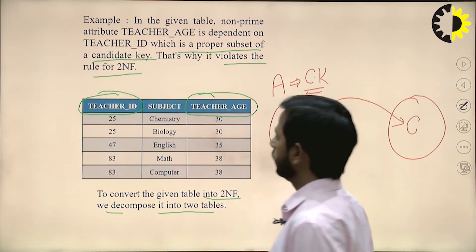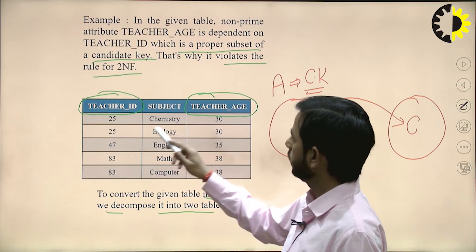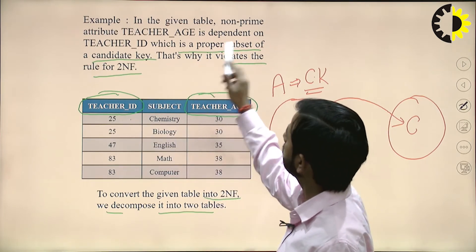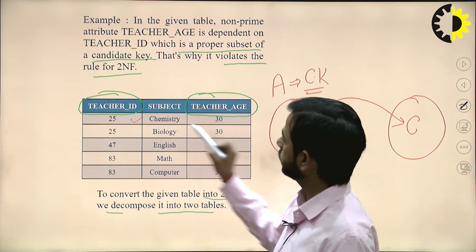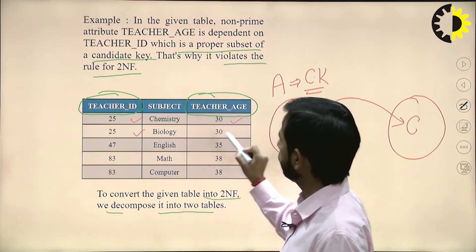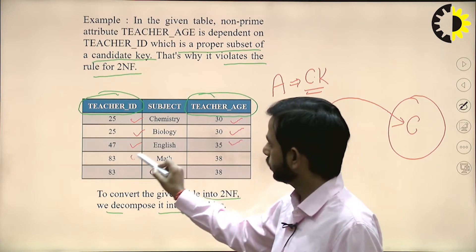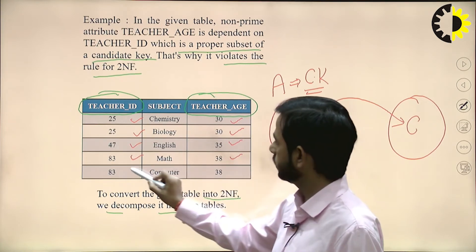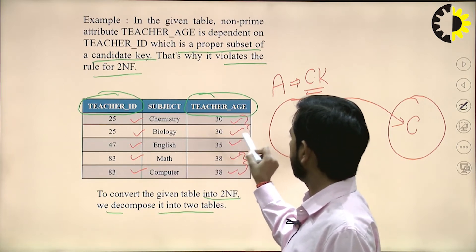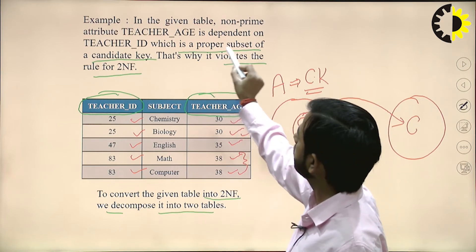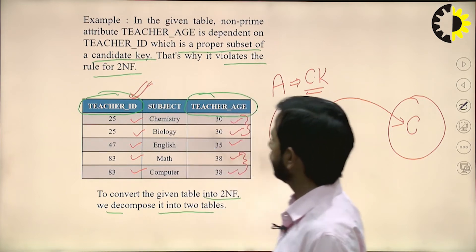Here, teacher ID, chemistry, and teacher age — teacher age is dependent upon teacher ID. Corresponding to ID 25 there is age 30, corresponding to 47 there is 35, corresponding to 83 there is 38. These values are repeated and teacher ID is a proper subset of the candidate key.